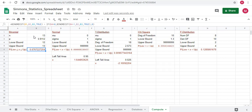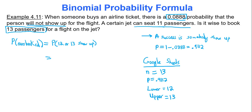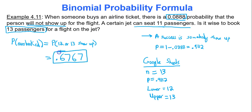Your homework will tell you what to round to, so we'll do four decimal places for this one: 0.6767. The probability that the flight is overbooked is 0.6767 — that means about a 67.5% chance that the flight will be overbooked. So if you're an advisor to this airline company, would you advise them to book 13 passengers on an 11-passenger flight? I would say no.